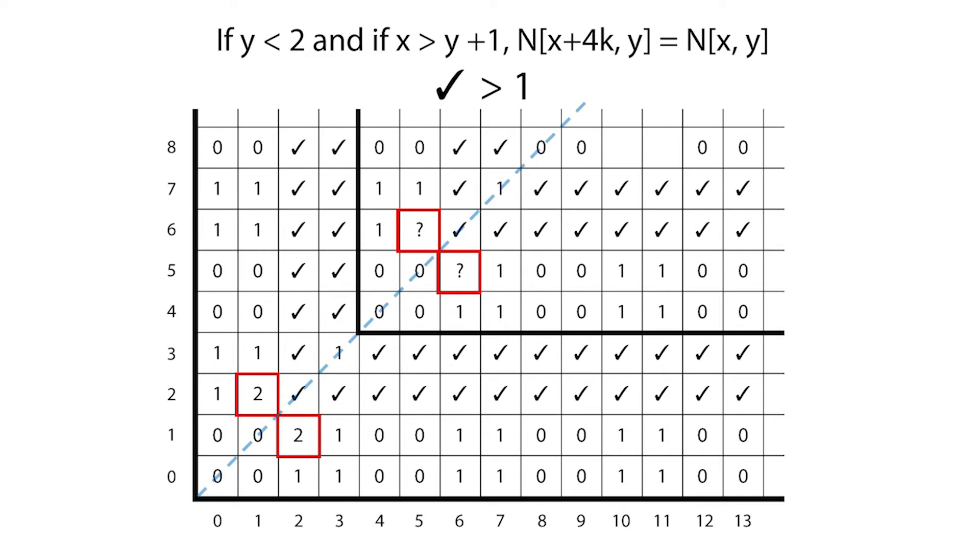So we need to resolve the values of the checkmarks on rows two and three. The next entry in row two is three, as is its reflection. The next entry in row three is four, as is its reflection.